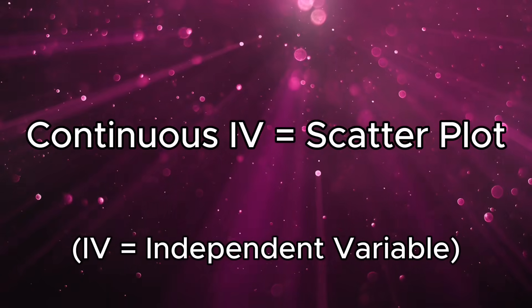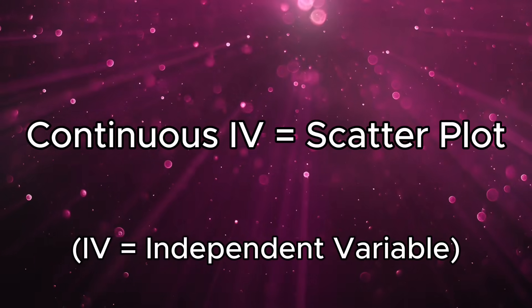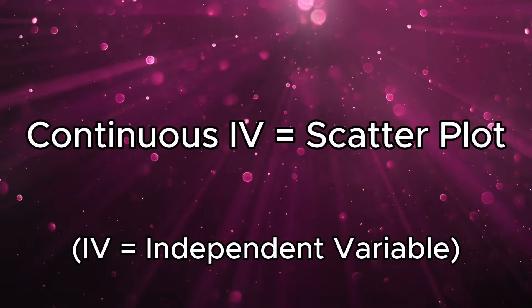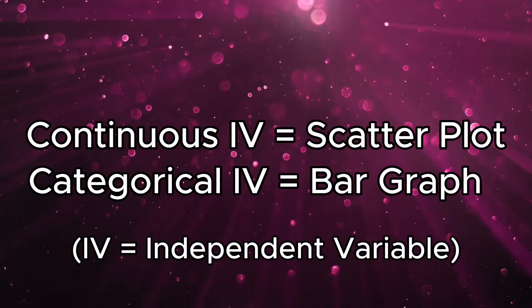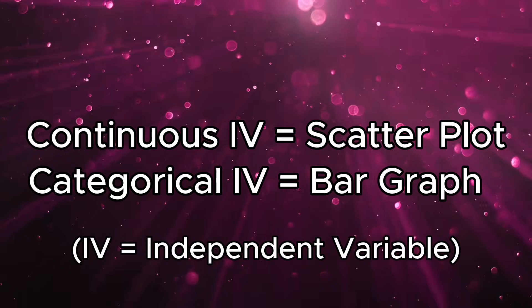The major difference between scatter plots and bar graphs comes down to whether the X-axis is a continuous variable or a discrete or categorical variable. Long story short, for continuous variables we use a scatter plot, while for categorical variables we would use a bar graph. Let's take a look at some examples.